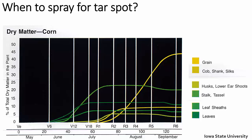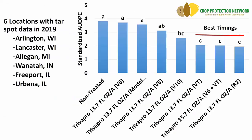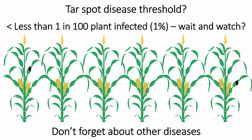With a couple of months to protect foliage, we really need to think carefully about timing. This is some data from last year. Tar spot was really late to get going last year as well, but it does point out that very early applications didn't do much. We've got a non-treated check, V6, V8, and V10. As we start to head into VT/R1 timings, we get better suppression of disease. But this year we're really asking what we need to do to go beyond that R1 timing. So we're looking at R3, R4, and even R5 timings this year to get a better handle on that.